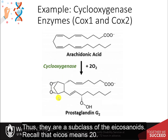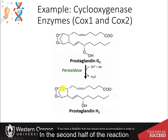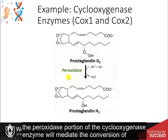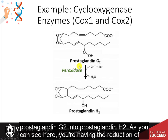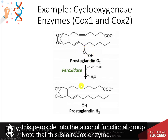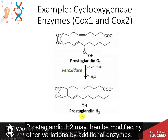Recall that 'eicos' means 20. In the second half of the reaction, the peroxidase portion of the cyclooxygenase enzyme will mediate the conversion of prostaglandin G2 into prostaglandin H2. As you can see here, there is a reduction of a peroxide into an alcohol functional group. Note that this is a redox enzyme.